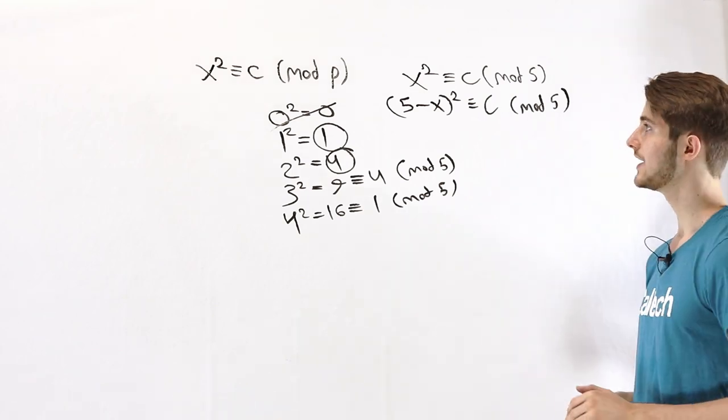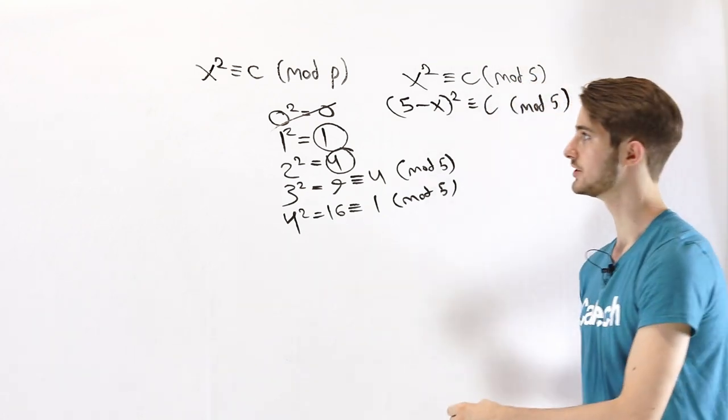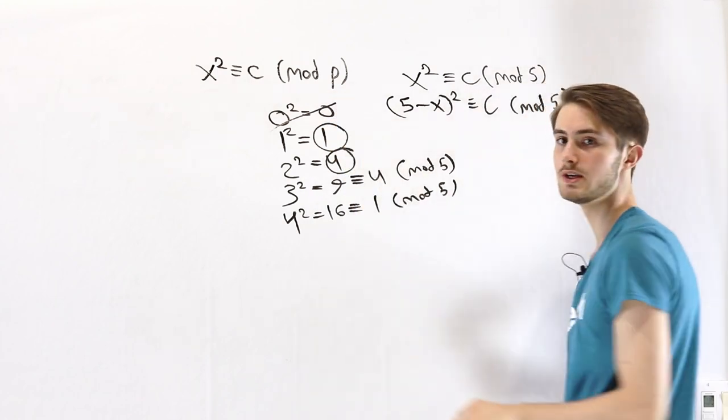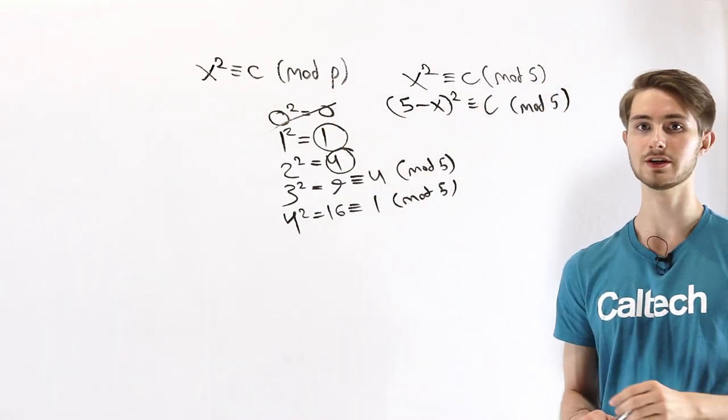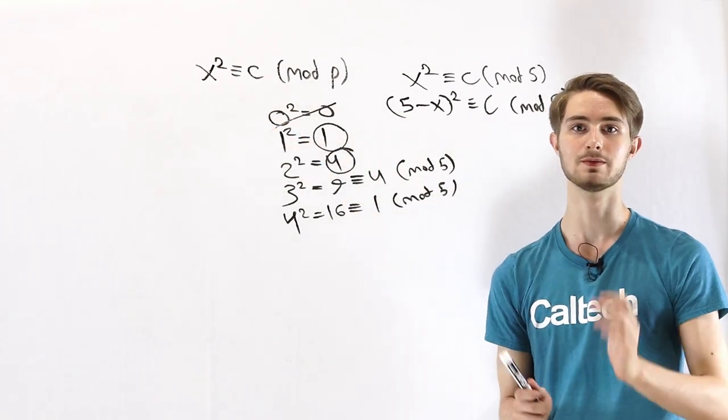That's how quadratic residues work. We say that a number is a quadratic residue if there's some other integer that when we square it, it's congruent to c mod p. And we'll see a lot of important theorems later on in elementary number theory that are related to the idea of a quadratic residue mod p.